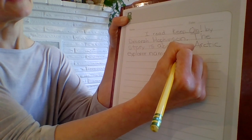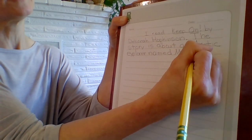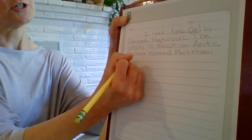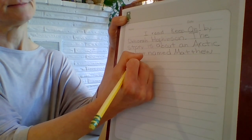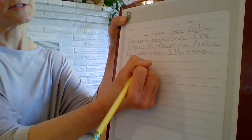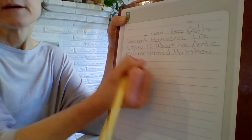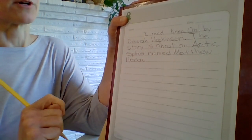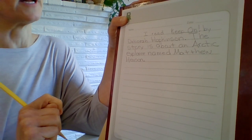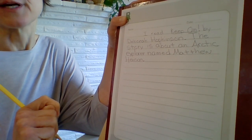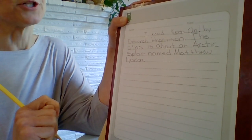I'm going to use a capital M as I write Matthew, and a capital H as I write Henson, because both of those are proper nouns. I need to tell a little bit more than just saying that the story was about an Arctic explorer named Matthew Henson. So I'm also going to add that the story tells about how Mr. Henson became an explorer and reached the North Pole.